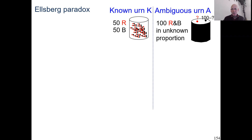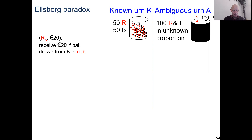We don't know how many balls are red — maybe 70 are red and 30 are black, or maybe 95 are black and 5 are red — we just don't know, unknown composition. We're going to randomly draw a ball from both of these urns, inspect the color, and then gamble on the color. Here's the notation of gambles: for instance, this is the known urn, the ball drawn from it has color red, then you get 20 euro, otherwise you get nothing. So the prize is 20 euro; you're gambling on the color of the known urn being red. This is how I denote gambles.